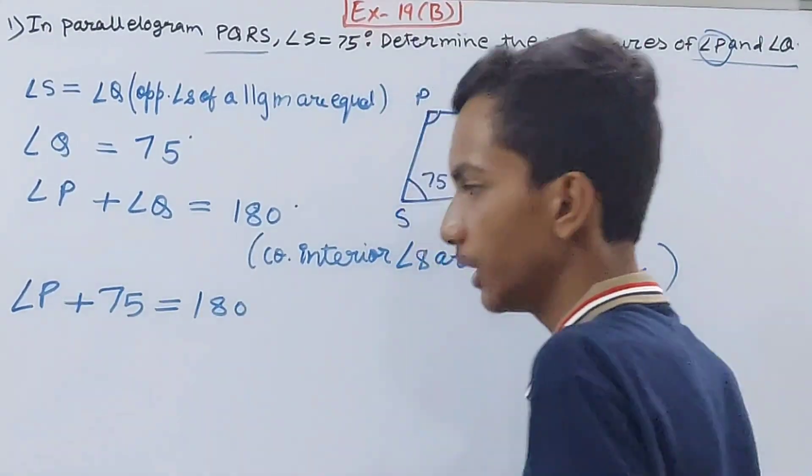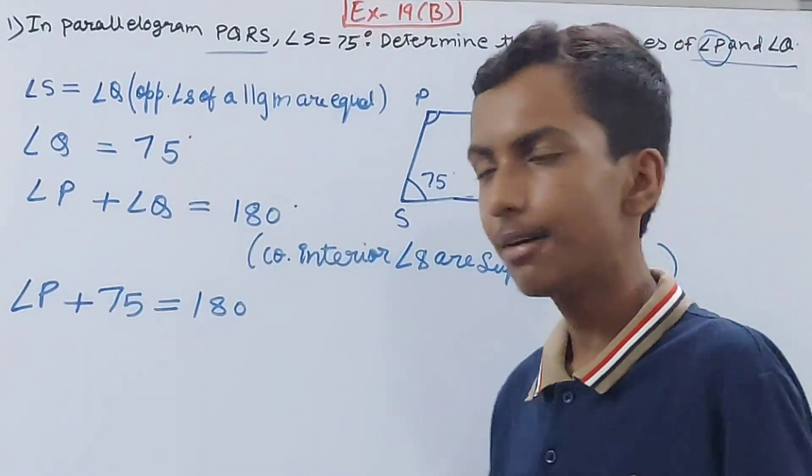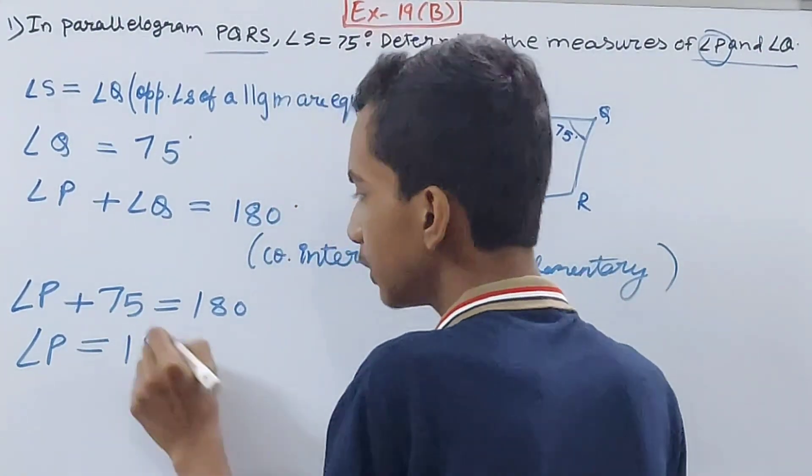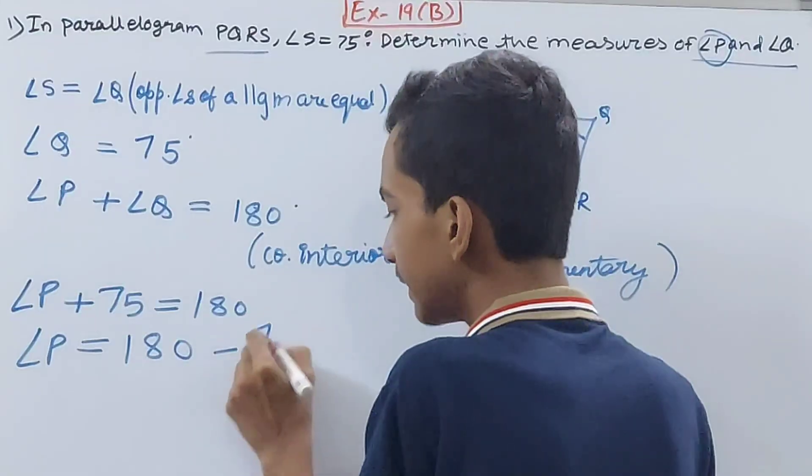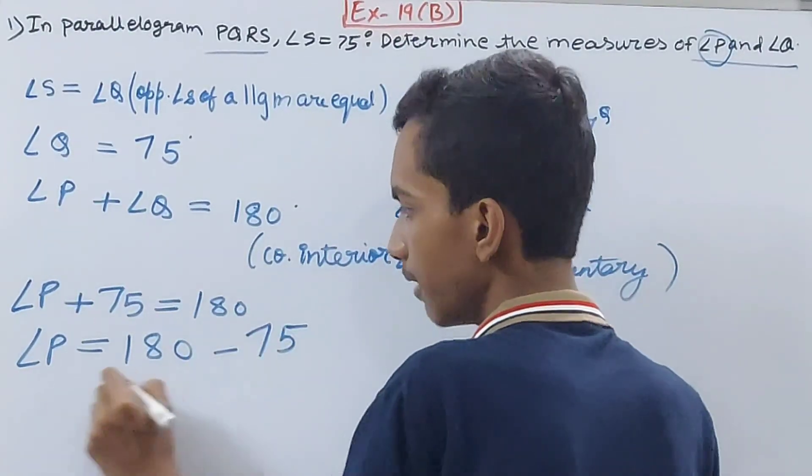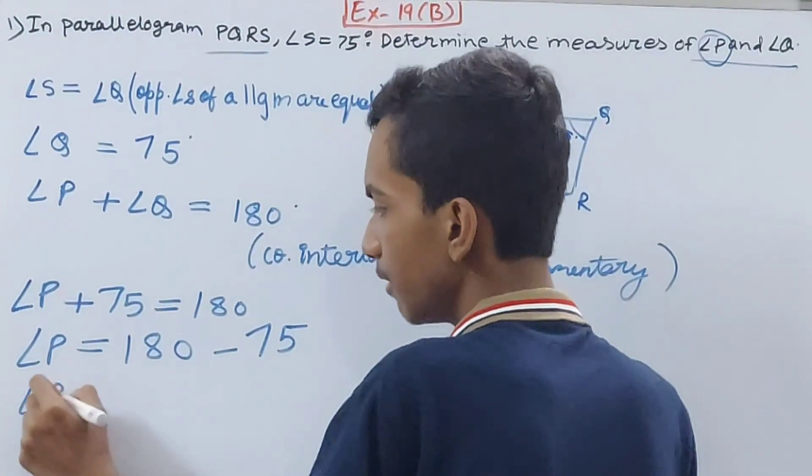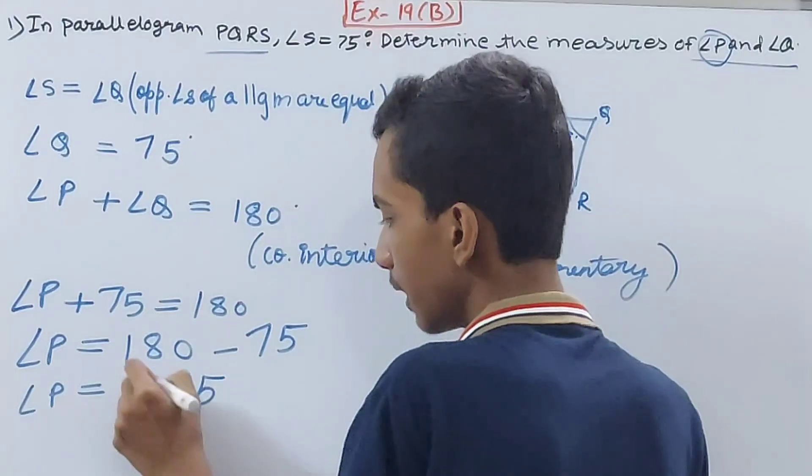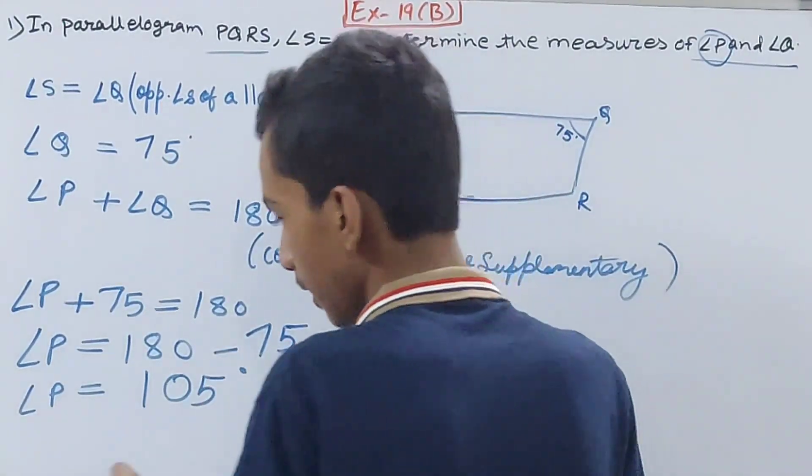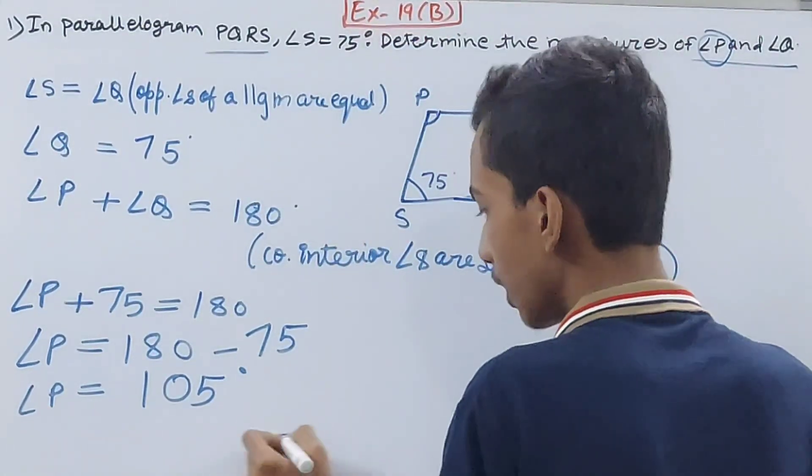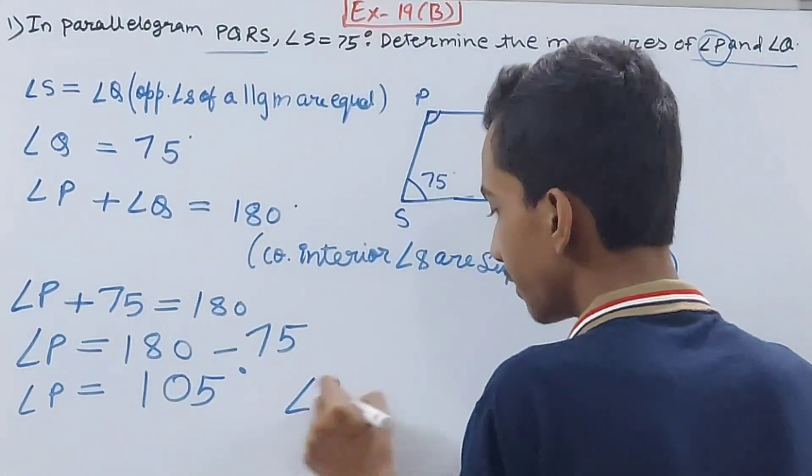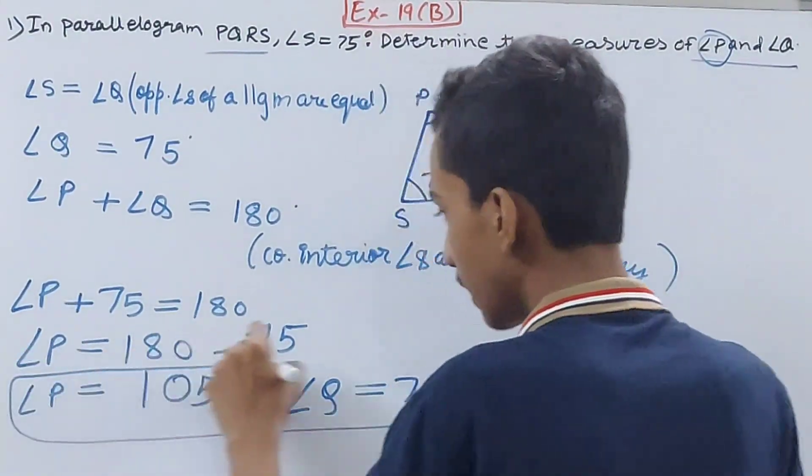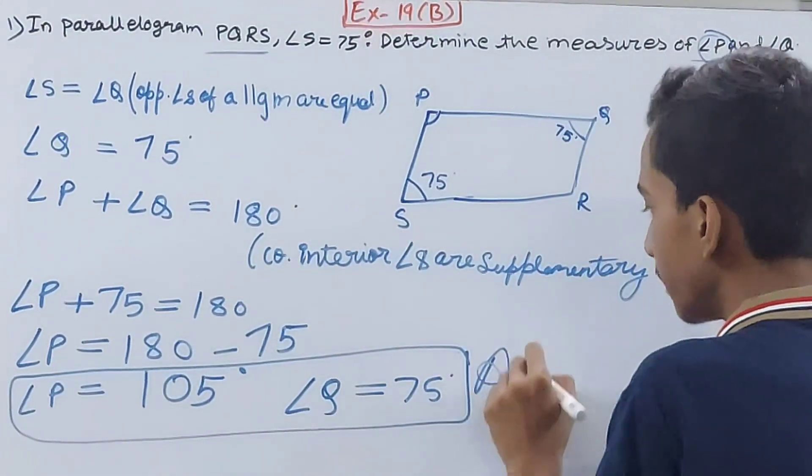So we have substituted this. Now we will have angle P equals 180 minus 75. Therefore angle P will be equal to 105 degrees. And we also found angle Q, that is 75 degrees. Both of them were asked, so both of these are your final answer: 105 and 75.